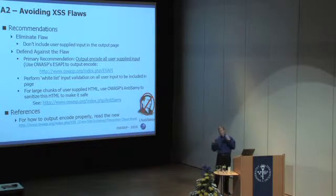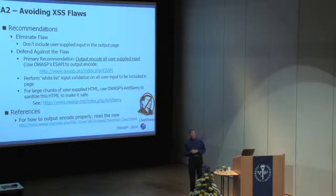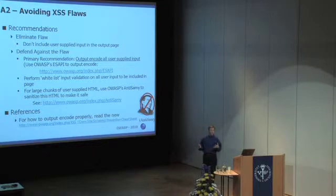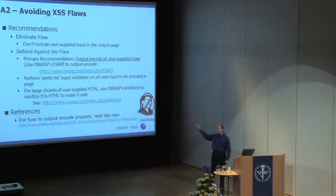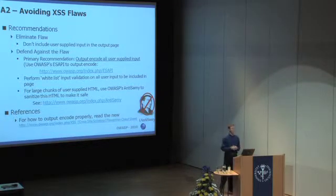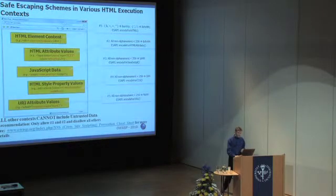Output encoding is so much easier than input validation because you don't have to think hard about what's legal, and if it's illegal you don't have to figure out how to react in terms of error handling. However, research has shown it's not as simple as we thought. A lot of people give the guidance 'HTML-encode your output and you'll be safe from XSS' — that's true 95% of the time, but 5-10% of the time it's not. The XSS cheat sheet explains that there are actually five different contexts on an HTML page, each requiring a different encoder.